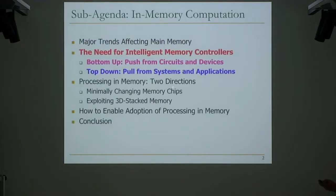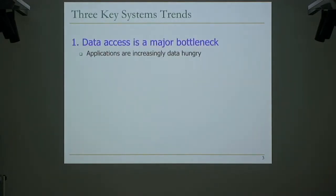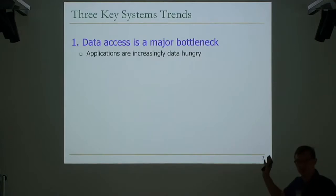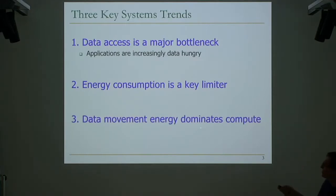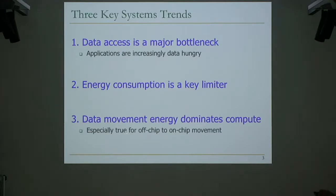Let's start with the top-down view, since we covered the bottom-up well. The key system stress is that data access is a major bottleneck. Applications are increasingly data-hungry — bioinformatics and genome analysis are becoming even more data-hungry. Energy consumption is a key limiter, and data movement energy dominates compute energy. This is especially true for off-chip to on-chip data movement.